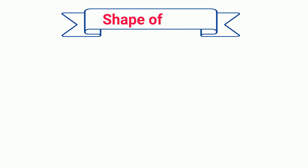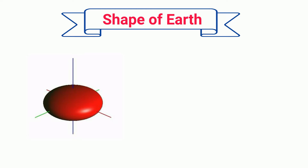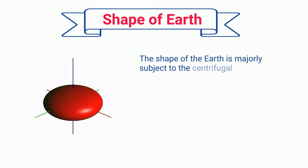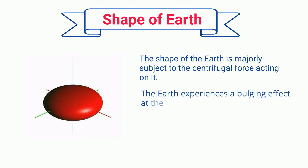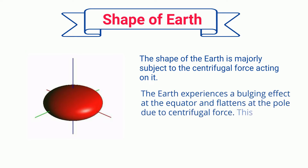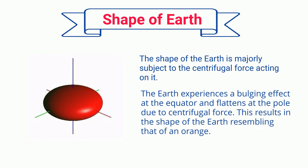Regarding the shape of the earth, the earth's shape is majorly subject to the centrifugal force acting on it. The earth experiences a bulging effect at the equator and flattens at the poles due to centrifugal force, resulting in the shape of the earth resembling that of an orange.